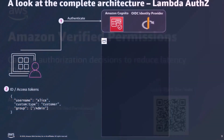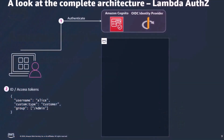Before we begin and deep dive into caching, let's take a complete look at the architecture of the application and how we have used the Quick Start to protect its APIs. In any application, the first step is to authenticate the user. This can be done using either Amazon Cognito or an OIDC identity provider.